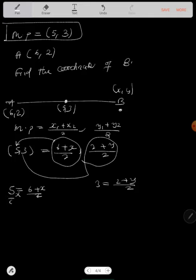We cross-multiply. 2 times 5 is 10, equal to 6 plus X. This will be 10 minus 6 equal to X. So 4 equals X, or X is equal to 4.